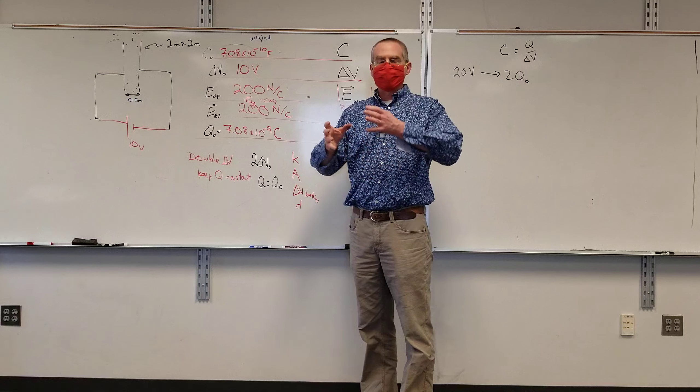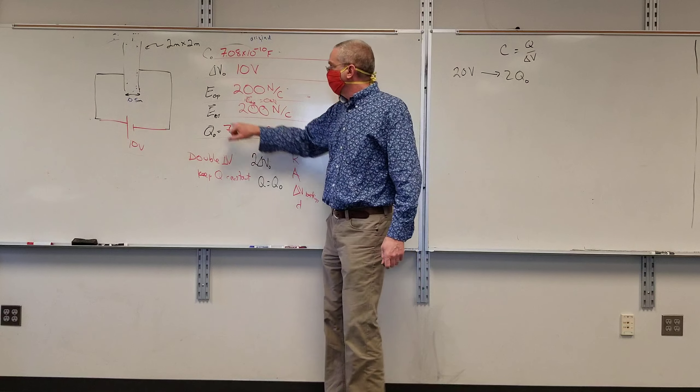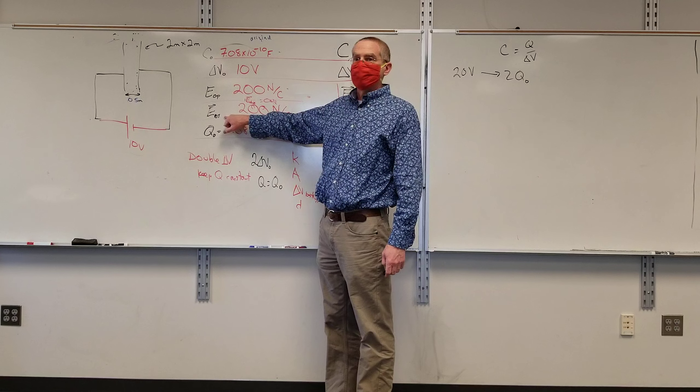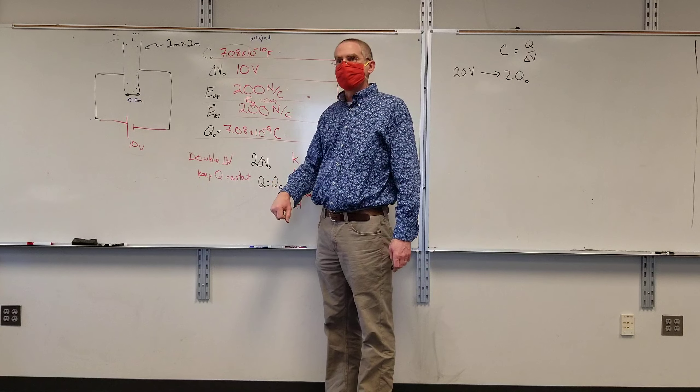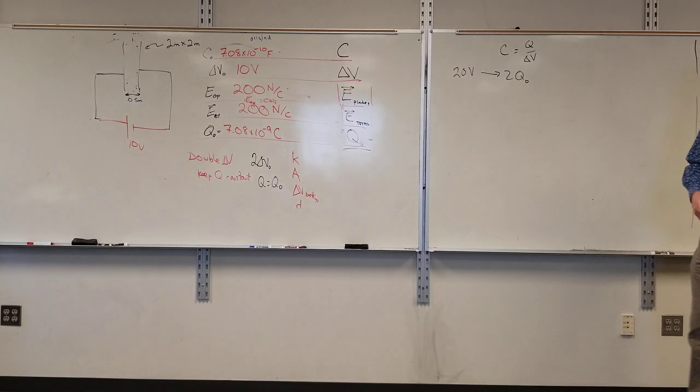Wait, can you take a quick moment to explain your notation? I feel like I'm not clear. The sub zero is just the original. This is what we started with. The P and the T is plates and total. Okay, I got it. Thank you. I thought that if we just doubled the distance, because the end goal that we're trying to get to is doubling the voltage at the end, and keeping the charge the same. I don't think if we just doubled the distance that it would double the voltage.